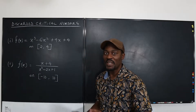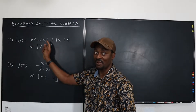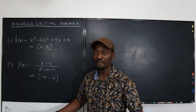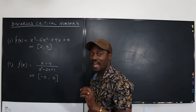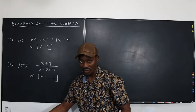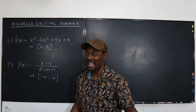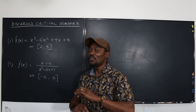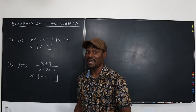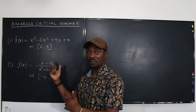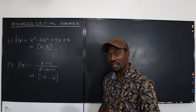The second condition is that even if the number is in the domain, it also has to fit within the given interval. For example, if the interval is from two to four, the critical number cannot be less than two or greater than four. If it is, you cannot use it — because if you do, you will get an answer, but your answer will be wrong. That's what I want to show you with these two examples.